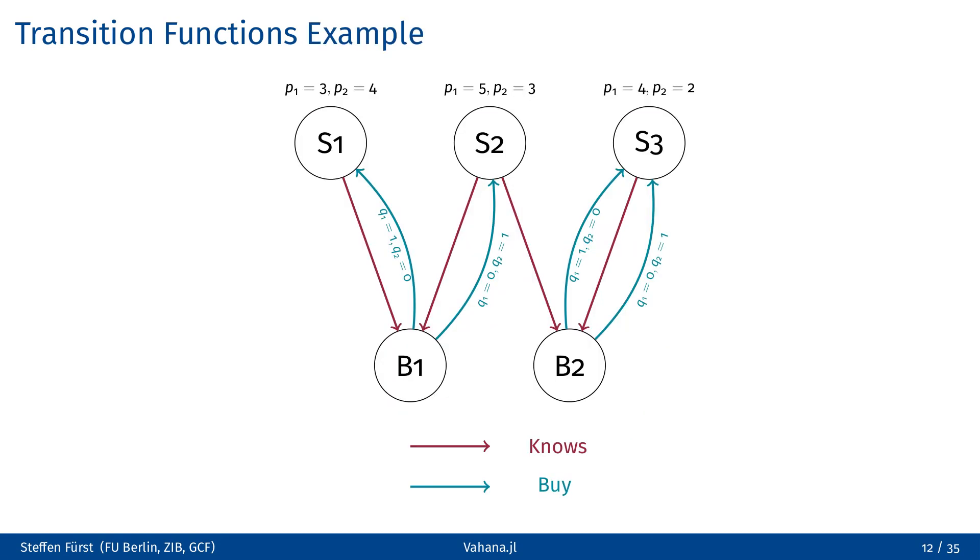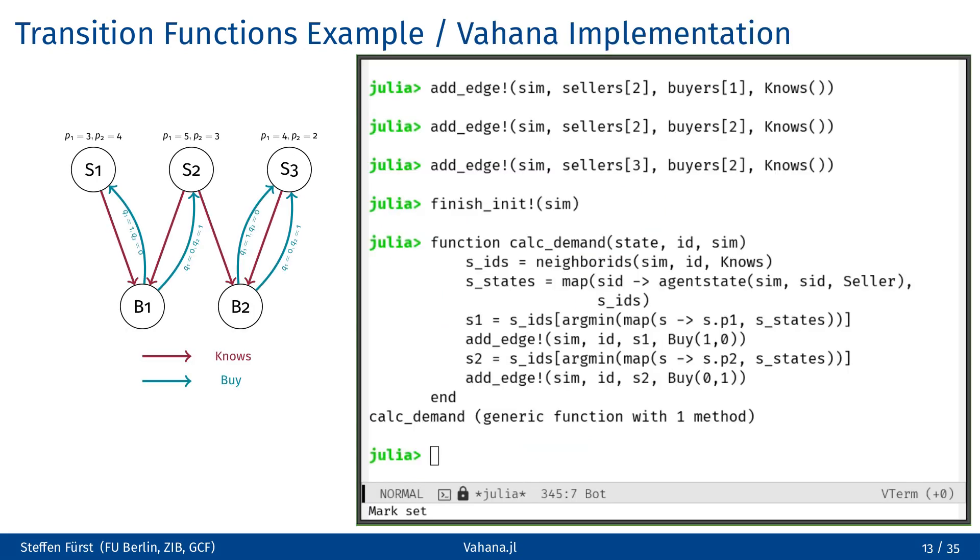We now create a transition function for our simple model. In this function, every buyer agent will fetch a unit of each good from the seller agent who offers this good at the lowest price. A transition function always takes three arguments. The first is the state of the agent making decisions within the transition function. The second is the ID of the agent and the third is the simulation itself. To calculate the demand, each buyer must fetch the prices established by the sellers. First, we call the function neighborIDs to get the IDs of all agents connected to the current agent via edges of type knows. With these IDs, the agent can then query the state and thus the prices of the sellers. The buyer can now identify the seller offering the lowest price for each good and create an edge of type buy from himself to the seller.